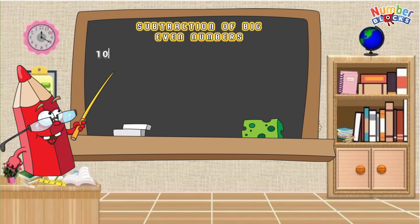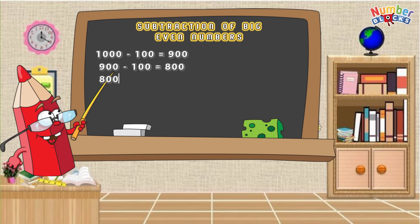1,000 minus 100 is equal to 900! 900 minus 100 is equal to 800! 800 minus 100 is equal to 700!